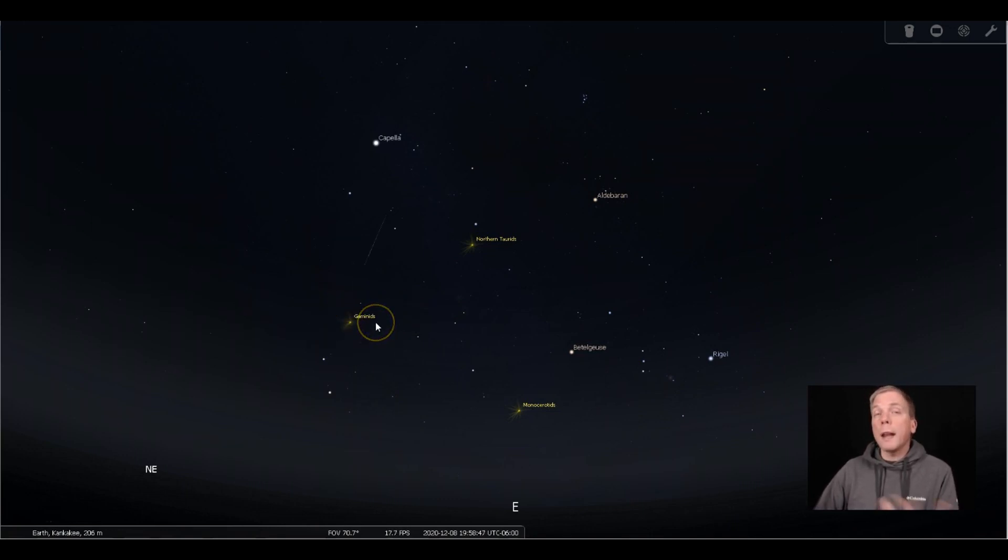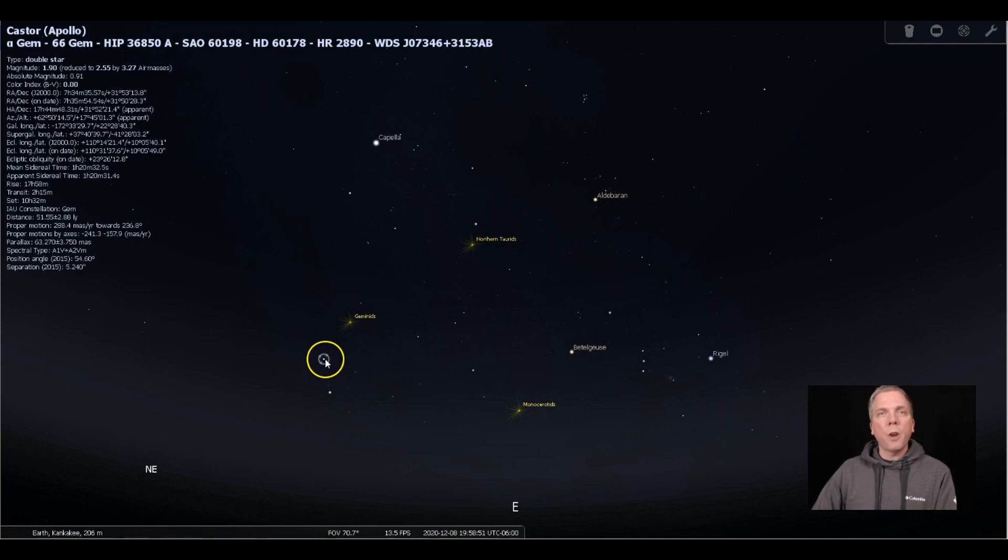Now the Geminids are going to appear to radiate from a point not too far away from where the star Castor is in the constellation of Gemini. So you can find that below Capella and to the left of where Orion is if you're in the northern hemisphere. If you're in the southern hemisphere, you're gonna have a different view of that for sure. But for most of us that are watching, we'll be able to see it radiate from here.